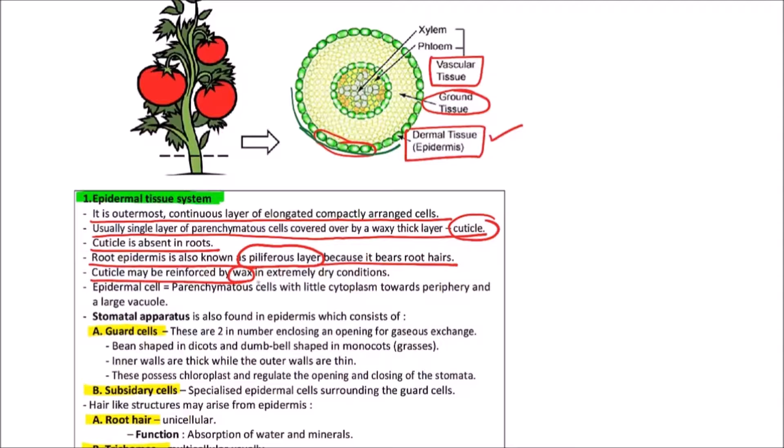To reduce the loss of water from the cell. The epidermal cell represents a parenchymatous cell with little cytoplasm towards periphery and having a large vacuole. In addition there are stomatal apertures or stomatal apparatus in the epidermis which are scattered.